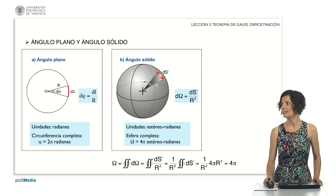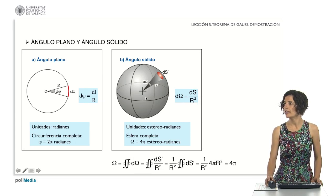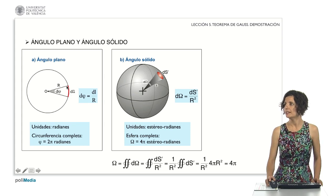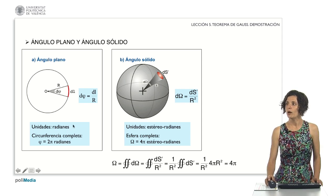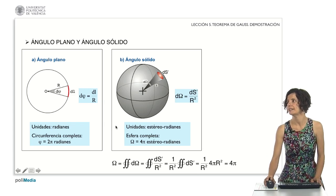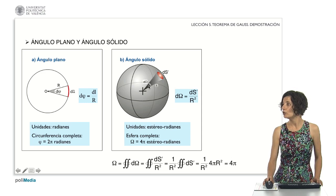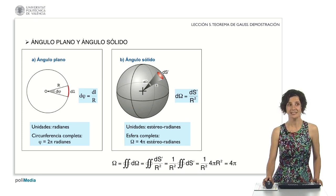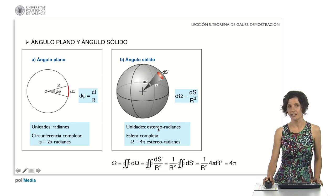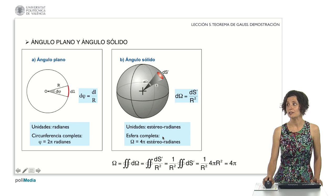The solid angle is a concept similar to the plane angle but in space. Recall that the elementary plane angle differential of phi is equal to the observed arc differential dl divided by the radius r — it is a dimensionless quantity measured in radians, and the full circumference subtends an angle of 2 pi radians. Similarly, the elementary solid angle is the differential observed area prime divided by r squared — also dimensionless, measured in steradians. The solid angle under which the whole sphere is observed is 4 pi steradians.